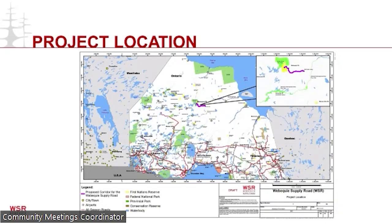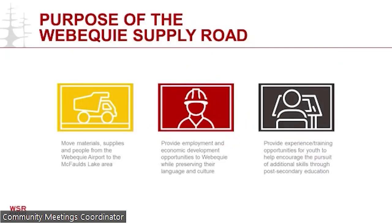Webequay First Nation is about 200 to 250 kilometers from the Hudson Bay and James Bay coasts, and the planned Webequay Supply Road runs south of Webequay and then east to the Ring of Fire area. The purpose of the Webequay Supply Road is to move people and supplies to the Ring of Fire area, create jobs and business opportunities for community members, as well as skills training opportunities for young people. As this is Webequay's project, this will be done in a careful, sensitive way that will preserve and strengthen the community's language and culture.